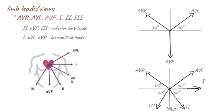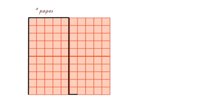The information gathered by the leads of the ECG is recorded on a graph as a tracing. The standard ECG paper speed is 25 mm per second. One small square is 1 mm and represents 0.04 seconds, while one large square is 5 mm and represents 0.2 seconds.